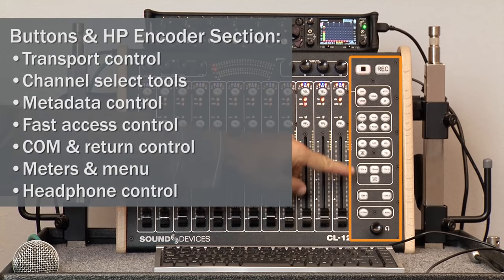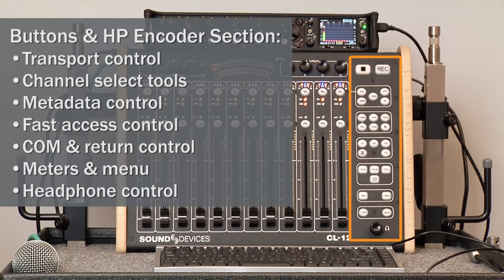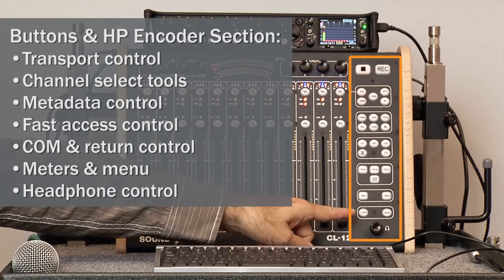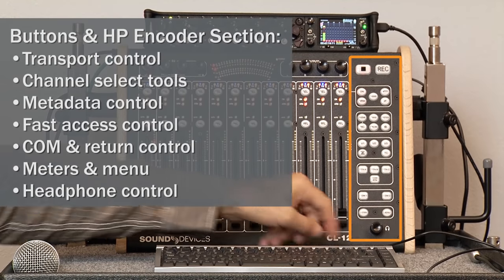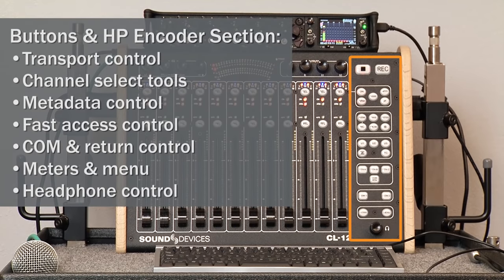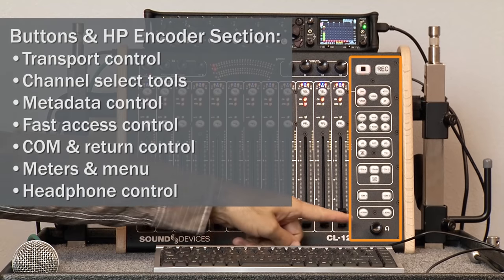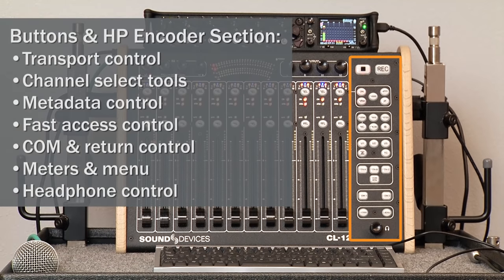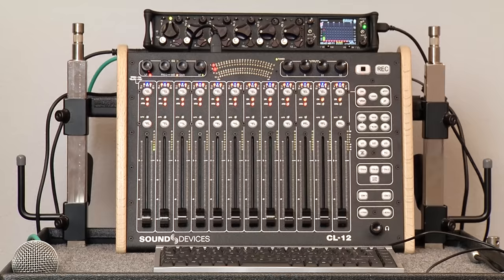Below that is our comms and return section, and below that further are the meters and menu button which duplicate our meters and menu button on the 688 front panel itself. And finally in the bottom right-hand corner we have a headphone level control and headphone preset control.